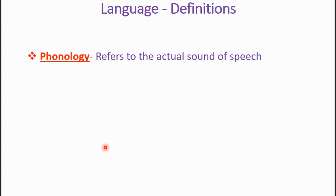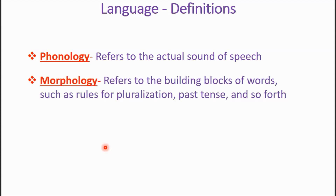Phonology refers to the actual sound of speech. An example is German sounds very harsh and Spanish sounds very smooth — that's phonology, the actual sound of the speech. Morphology refers to the building blocks of words, such as rules for pluralization, past tense, and so forth.